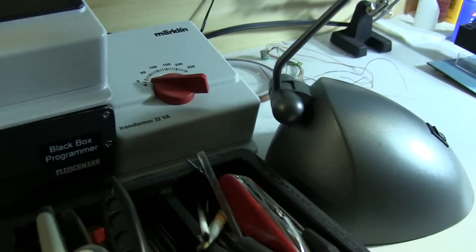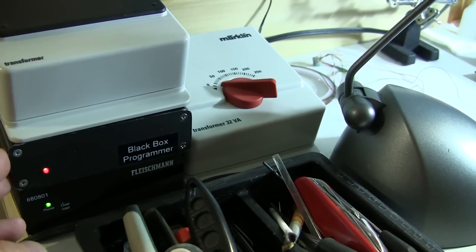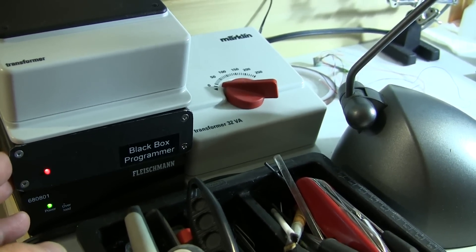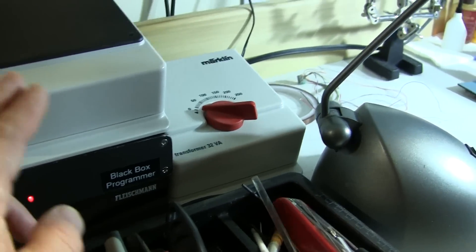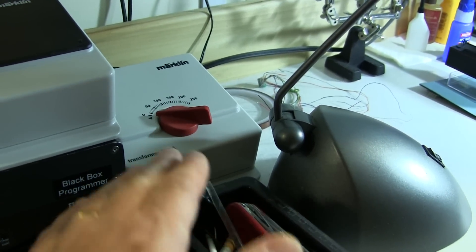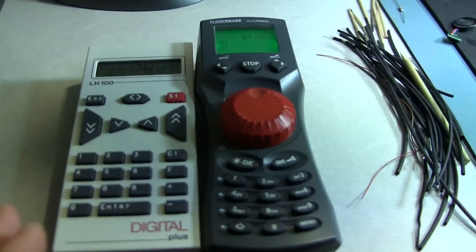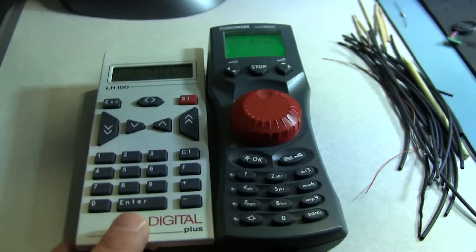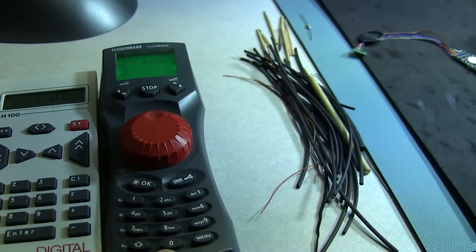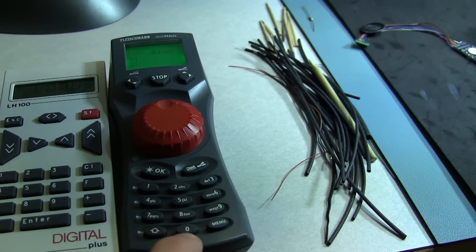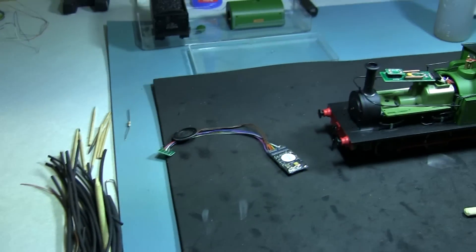You will see here my Fleischmann command station with the Lenz, it's actually not Lenz but using Lenz technology, black box programmer. I think they're still available and it's great programming tools. So I'm using two Marklin transformers. This is for testing also as well for Marklin locomotives. With this Lenz LH100 using black box programmer, I'm programming all my decoders and testing them. And this is Roco, actually Fleischmann Roco. My station I'm running trains with it.